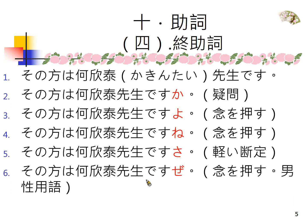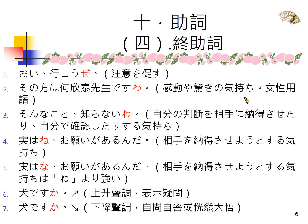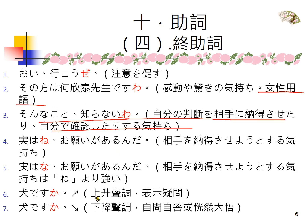终助词放在句尾，所以叫做终助词。它有各式各样的意思，包括女性用词わ的用法。像わ的用法，表示要让对方知道，或者是自我确认的这种心情的话，ね也可以用。わね在某些时候，两者区别不那么明显。上升声调的よ是疑问句，下降声调的よ是自问自答或恍然大悟的意思。今天我们要介绍终助词よ，其实有这些用法，还有它间投助词的用法。